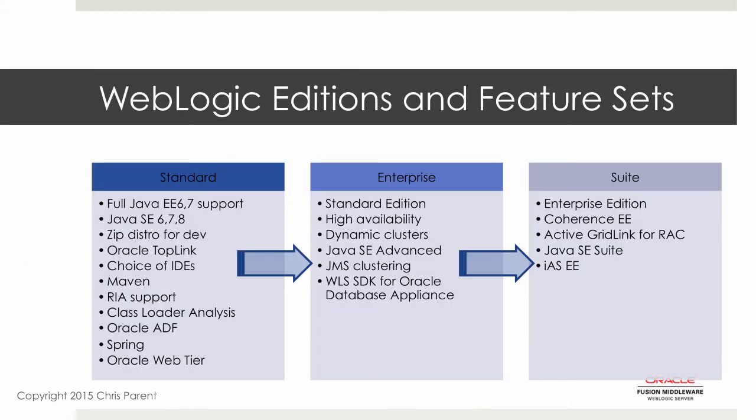When you go to license WebLogic, it comes in three editions. There's Standard, which is suitable for most small deployments. Then there's Enterprise Edition, which includes high availability and fault tolerance, more suitable for larger-scale production environments. And then there's WebLogic Suite Edition, which includes all feature sets, specifically Coherence Enterprise Edition and Active GridLink for RAC.